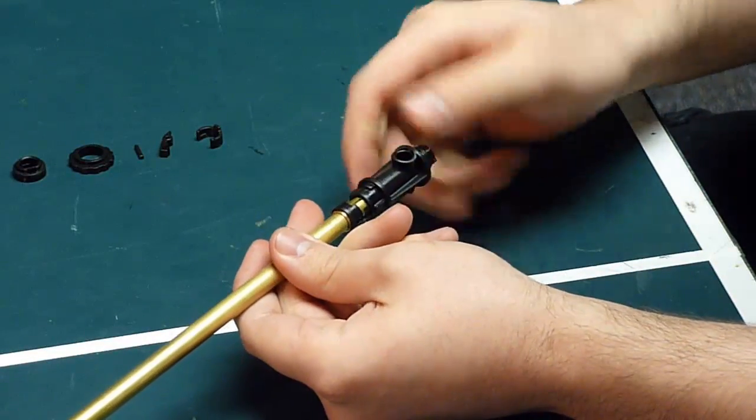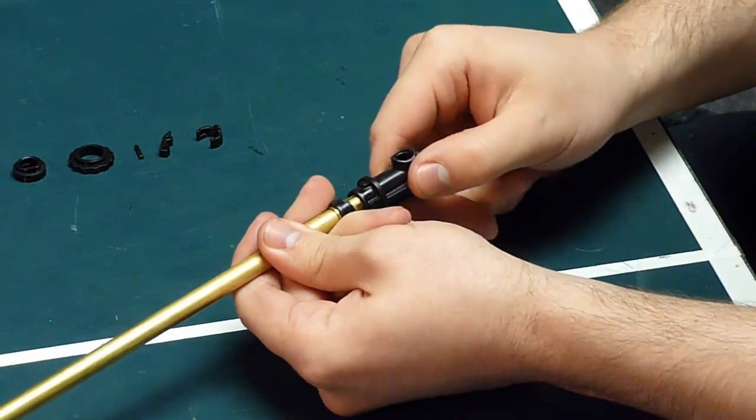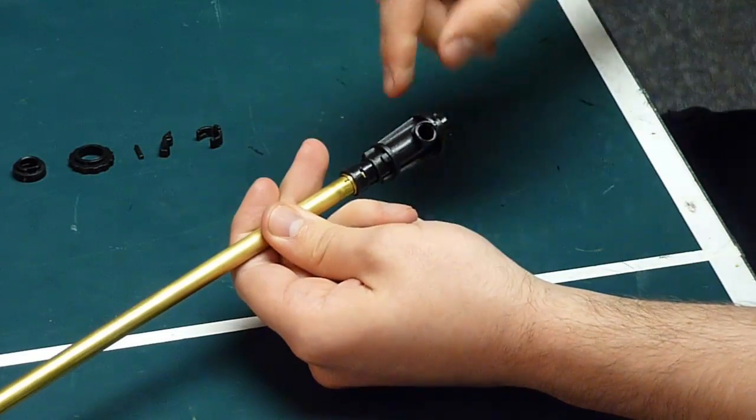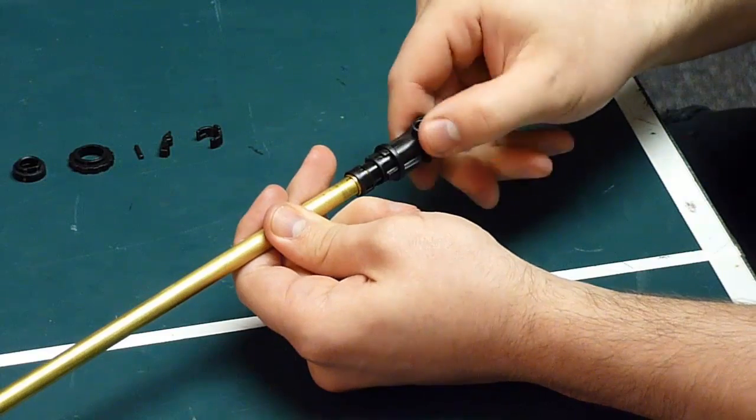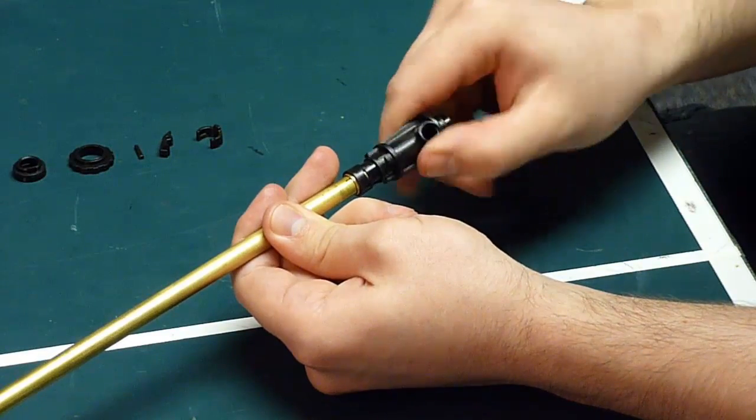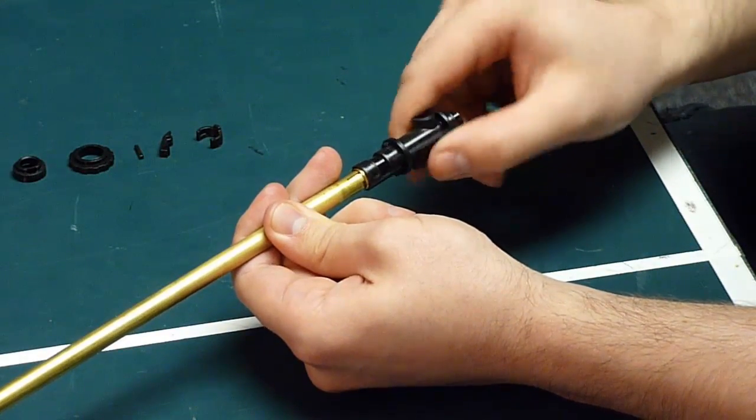And now your hop-up housing is free to be removed. You can just twist it off. Make sure your hop-up bucking doesn't get caught in any way here in the groove. Just try and finesse it off, like so.